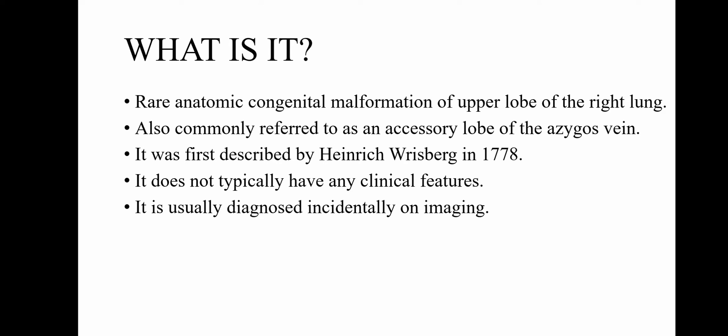The azygous lobe is a rare anatomic congenital malformation of the upper lobe of the right lung, also commonly referred to as an accessory lobe of the azygous vein. It is believed to have been first described by Heinrich Riesberg in 1778. It does not typically have any clinical features of its own and is usually diagnosed incidentally on imaging.